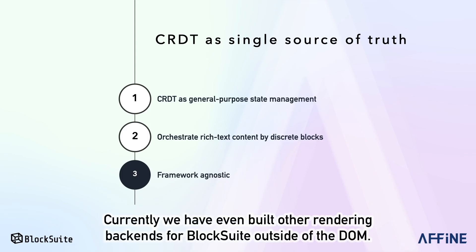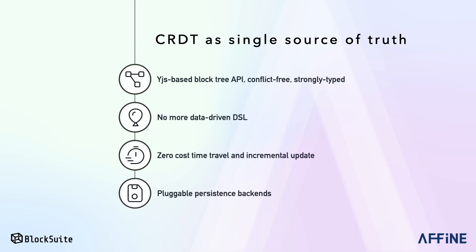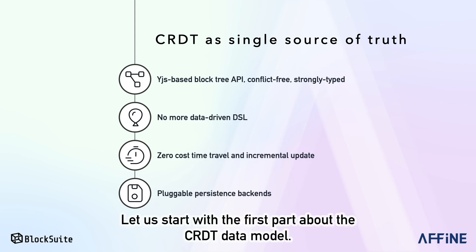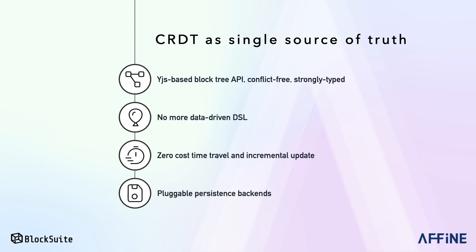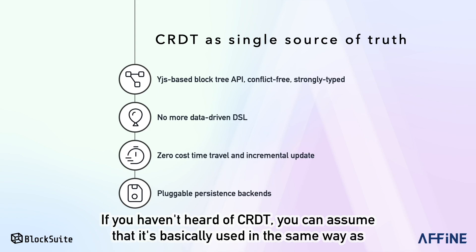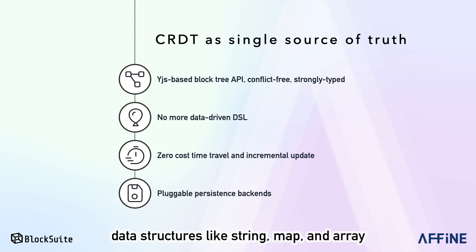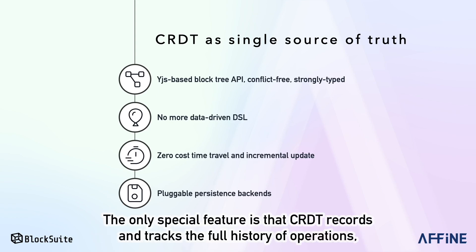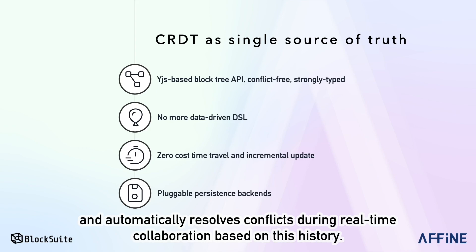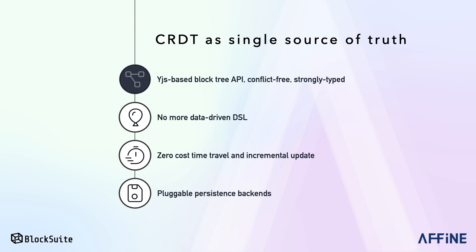Currently, we have even built other rendering backends for BlockSuite outside of the DOM. Let's start with the first part about the CRDT data model. If you haven't heard of CRDT, you can assume that it's basically used in the same way as data structures like string, map, and array that JavaScript developers will usually use. The only special feature is that CRDT records and tracks the full history of operations and automatically resolves conflicts during real-time collaboration based on this history.